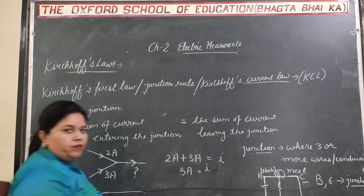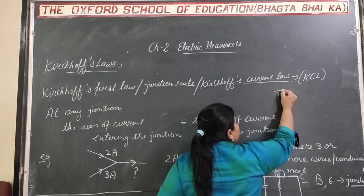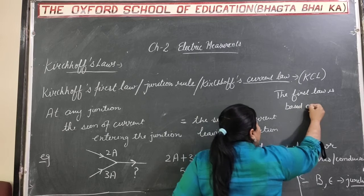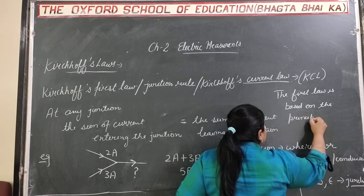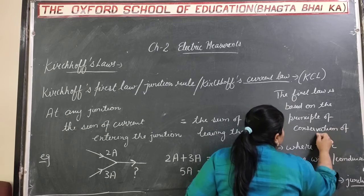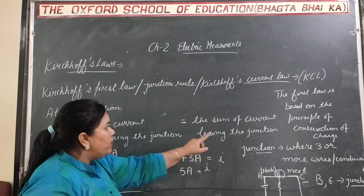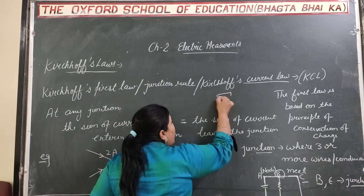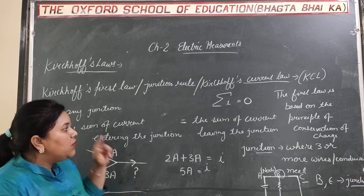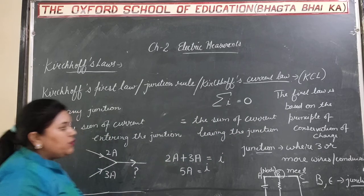Now, a very important question: on which principle is the first law based? The first law is based on the principle of conservation of charge. According to the definition of the first law, the sum of current entering the junction equals the sum of current leaving the junction, meaning the summation of I is always zero. Since current is the flow of charges in a particular direction, the amount of charge is always constant. So this law is based on the principle of conservation of charge.